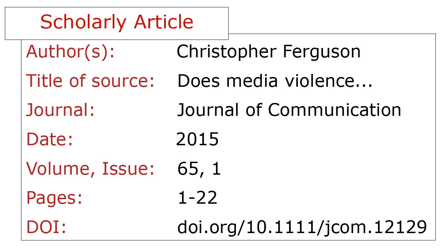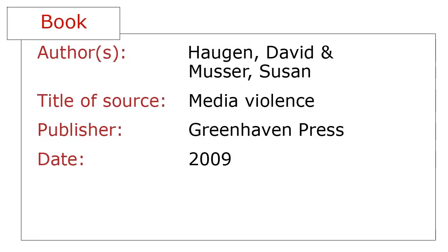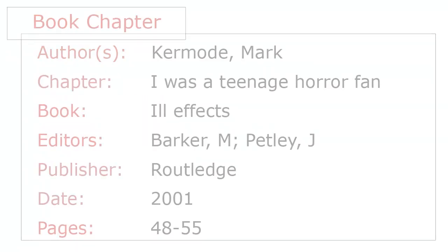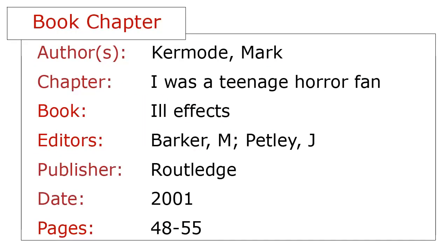Don't list the database you found the article in, like ProQuest. For a book, you'll need the authors, the book title, the publisher, and the publication year. Some books have chapters written by different people — if that's the case, you'll need to cite the individual chapter rather than the book. You'll need information on the chapter's author and title, the title of the book that the chapter is published in, the editors of the book, the publisher year, and the chapter's pages.